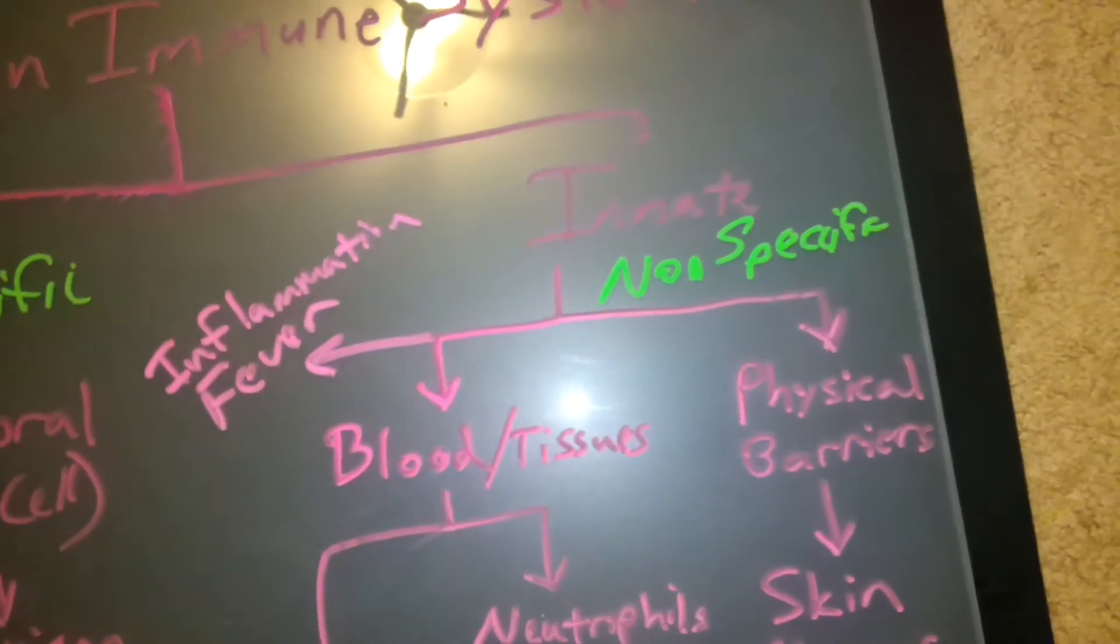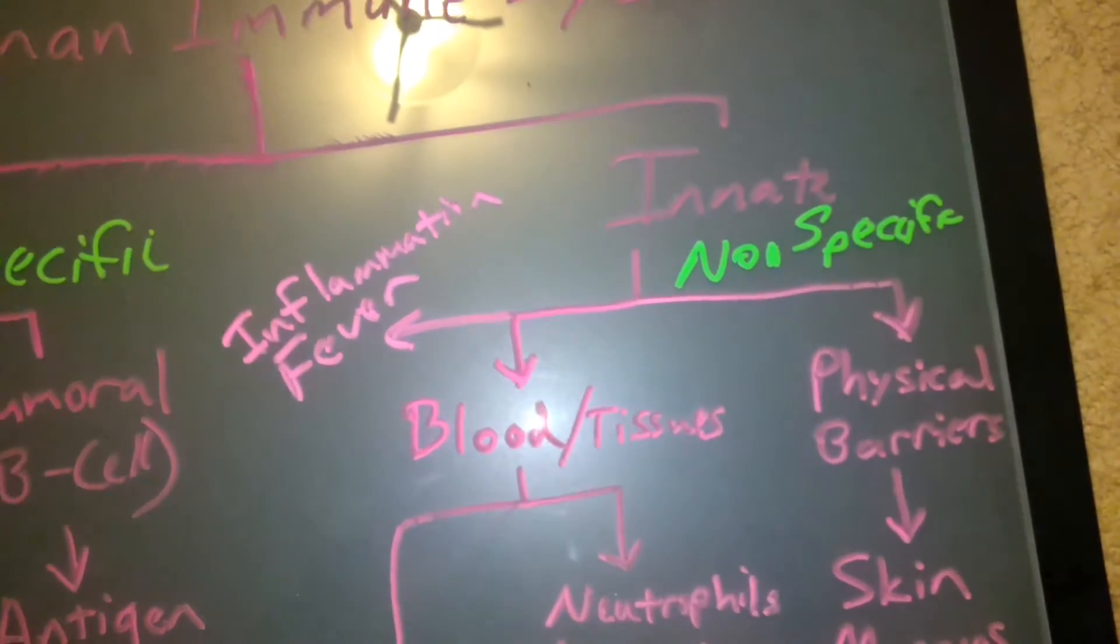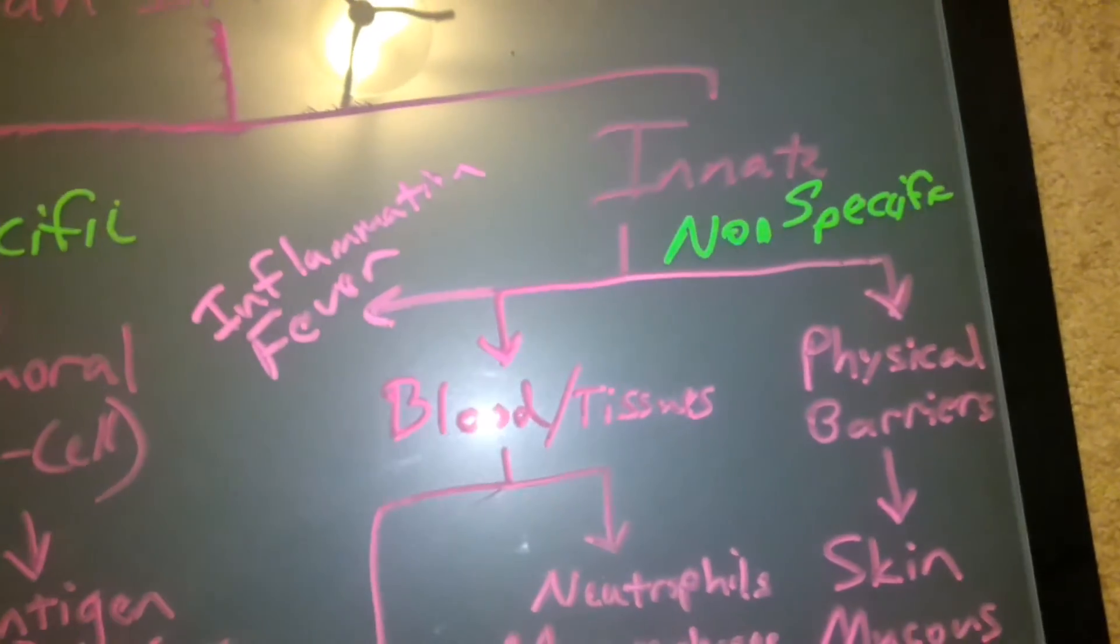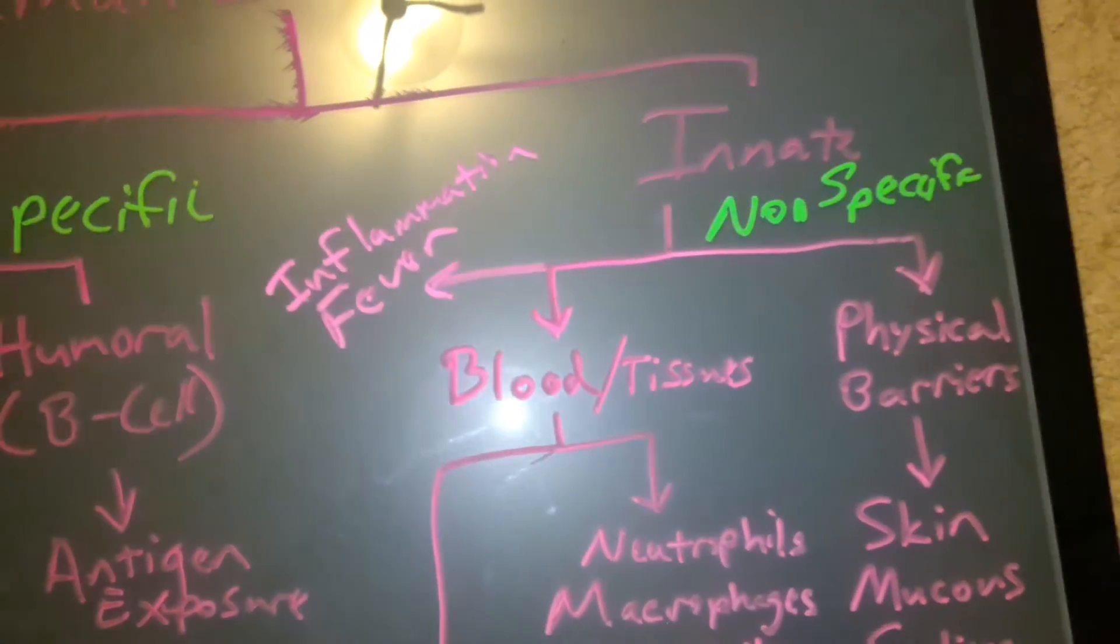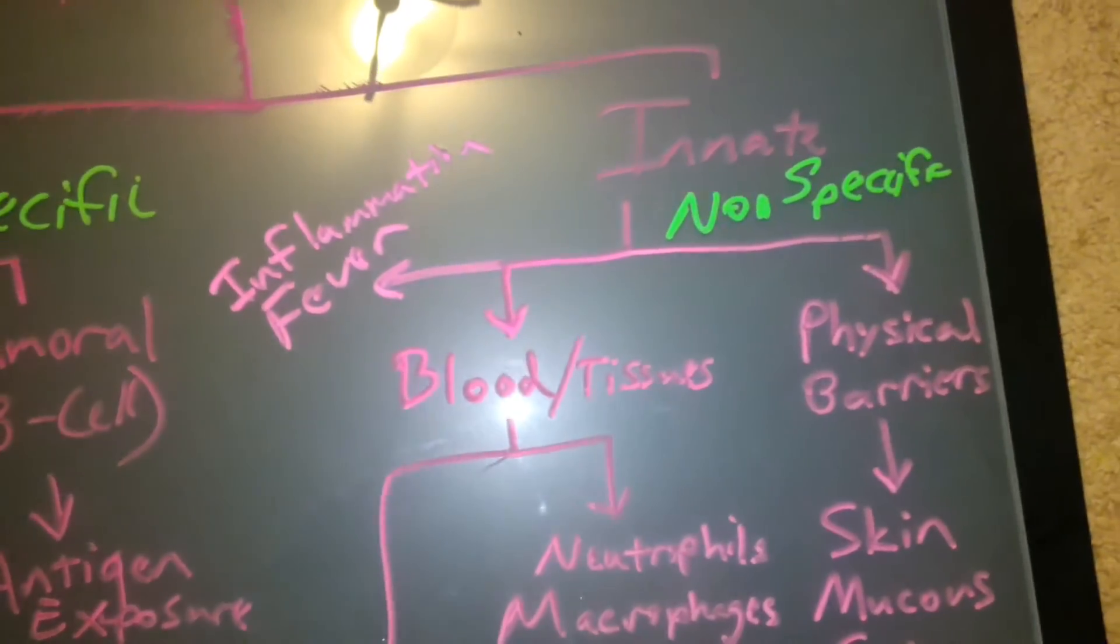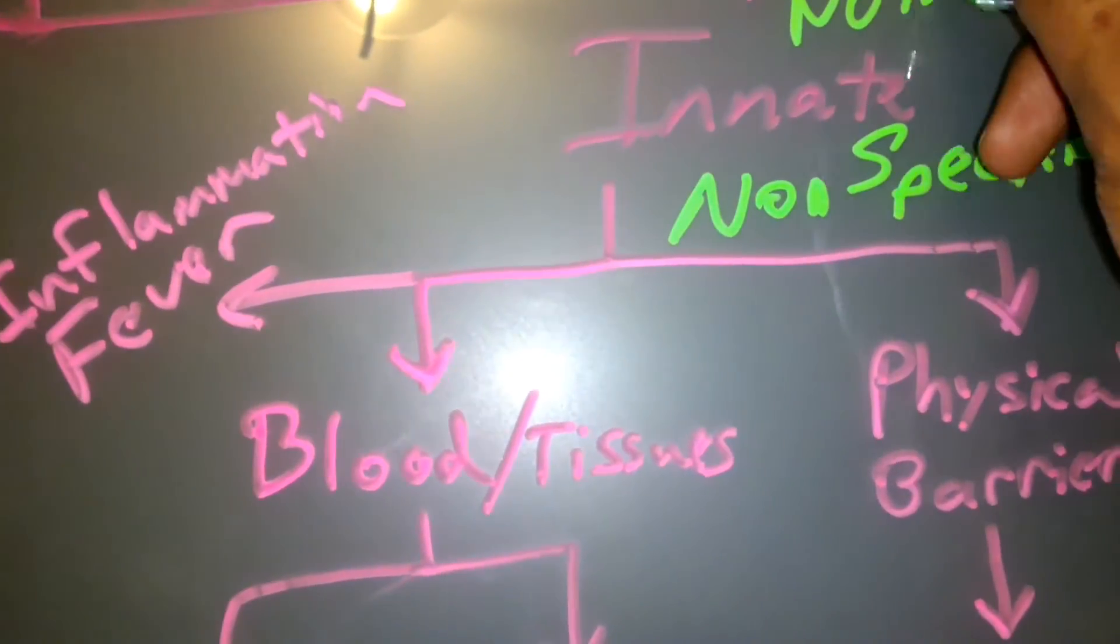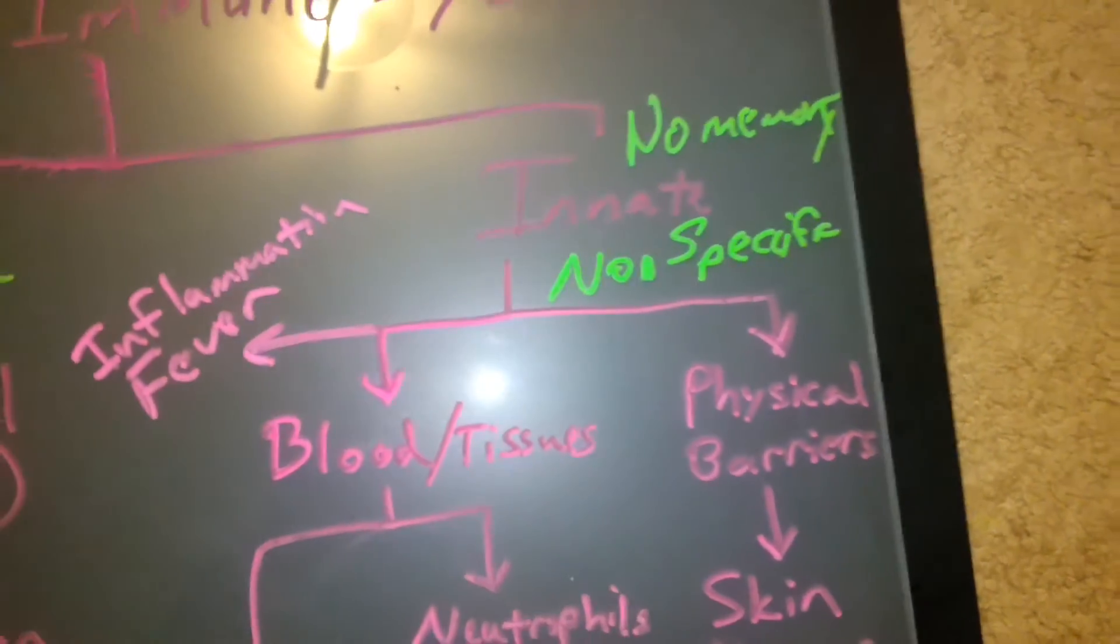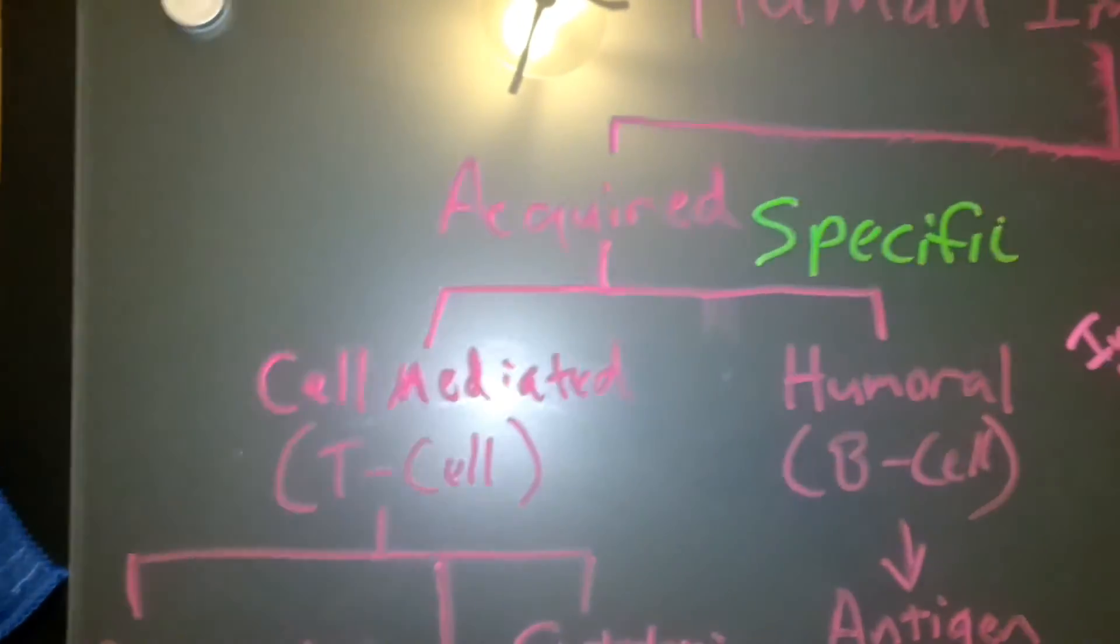Why is it called the non-specific and the specific? Well, because innate doesn't care what the pathogen is. It attacks it or it defends against it the exact same way. Doesn't matter who it is encroaching on the walls, it's going to defend the same way over and over again. That's good because if the defense works, it's always going to work. The bad part about it is it doesn't have a memory. There's no memory with innate. So it'll attack the same thing the same way, even if it doesn't work, versus acquired.